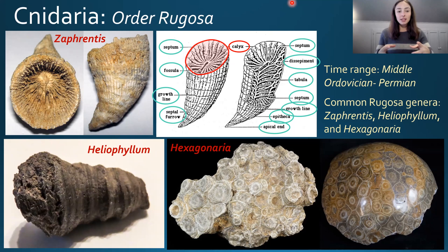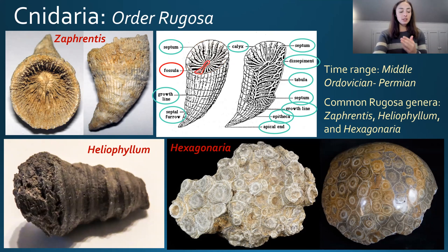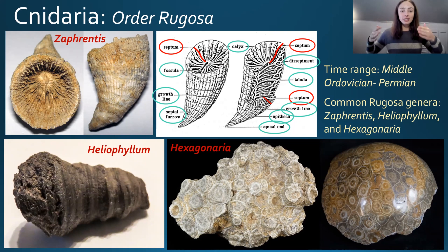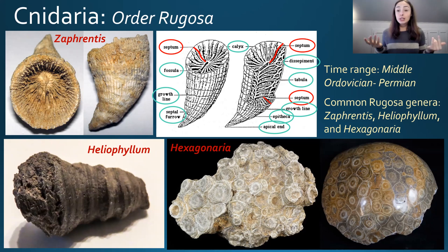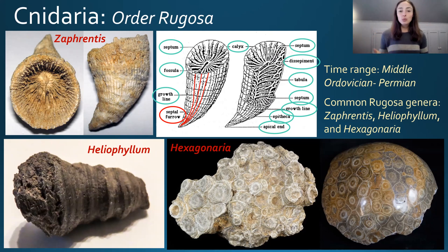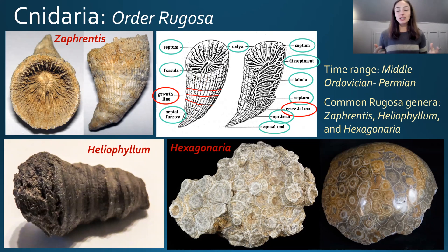First, the calyx represents the cup-like portion of the solitary horn coral. Within the calyx we have the fossula, which represents a large gap between the forming septa — radial-like separation structures throughout the horn coral visible at the top. The fossula, from Latin meaning 'little trench,' is the one gap among the septa. Septal furrows are where the septa affect the outer structure, and growth lines are horizontal lines on the horn representing new growth.